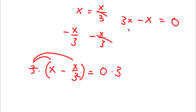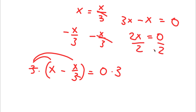So now, 3x minus x is simply equal to 2x. So I have 2x is equal to 0. If I divide both sides by 2, these two cancel out, and I'll be left with x is equal to 0 divided by 2, which is 0.